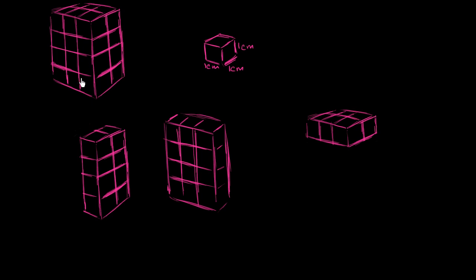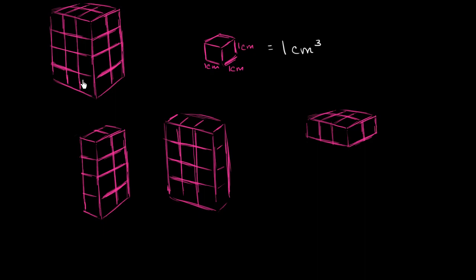I have this figure here. You could call it a rectangular prism. I want to measure its volume, and I'm defining my unit cube as being a 1 centimeter by 1 centimeter by 1 centimeter cube. It has 1 centimeter width, 1 centimeter depth, 1 centimeter height. This is equal to 1 cubic centimeter. So I want to measure this volume in terms of cubic centimeters.